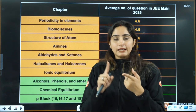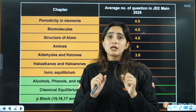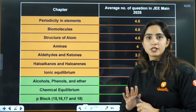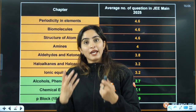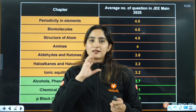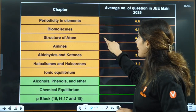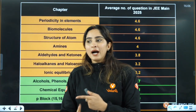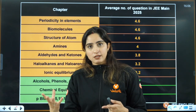Periodicity in elements forms the base of inorganic chemistry — you must know which elements are filled, isoelectronic species, and which oxides are acidic, basic, or neutral. For biomolecules, do everything from here — for JEE aspirants, most of it is bio-related structures. For structure of atom, important topics are Bohr's model and quantum numbers, but also have an idea of de Broglie wavelength and Heisenberg's uncertainty principle.